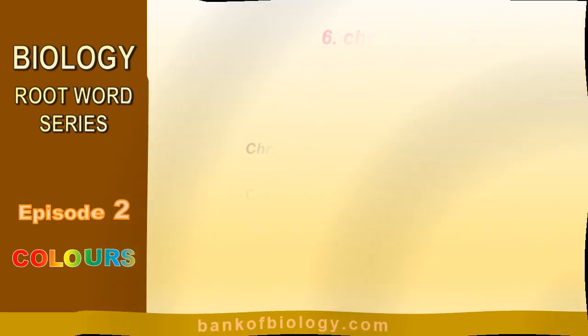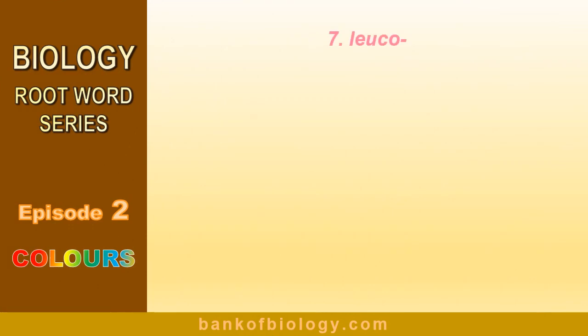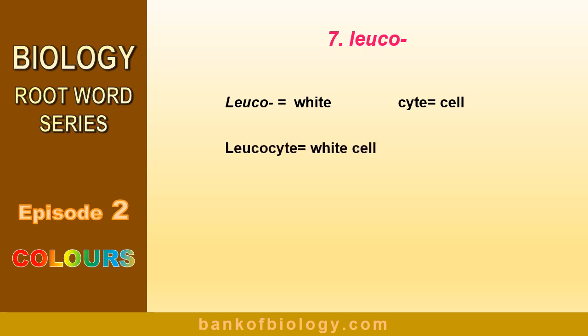Number 7: leuco. Leuco means white. Then what is leukocyte? You know the meaning of -cyte (C-Y-T-E) — it means cell. Thus, leukocyte means white cell. That's correct — it refers to white blood cells, or WBC. Leuco means white or is concerned with WBC.